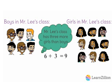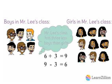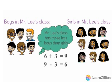Mr. Lee's class has nine girls, and if we took away three students, we would get six, which is the same number of boys in Mr. Lee's class. Therefore, Mr. Lee's class has three less boys than girls.